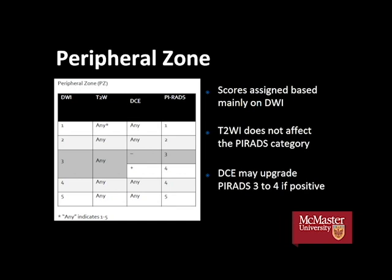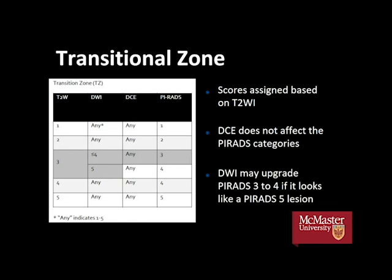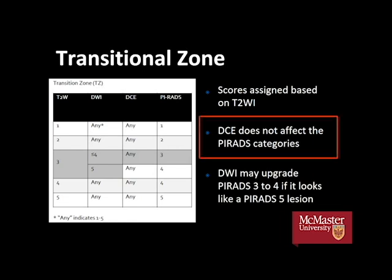Within the peripheral zone, scores are mainly based on the DWI sequence. The DCE, which uses contrast, applies here and may upgrade PI-RADS 3 lesions to PI-RADS 4 if it's positive. Whereas within the transitional zone, scoring is mainly based on the T2-weighted imaging sequence, and the DCE sequence does not affect scoring of lesions in this zone.